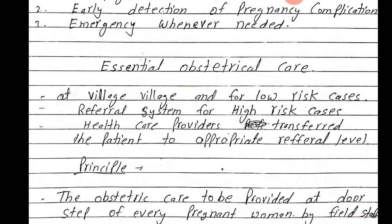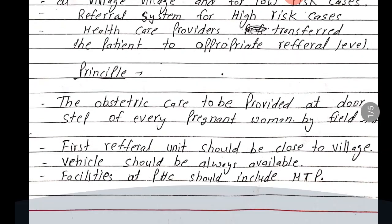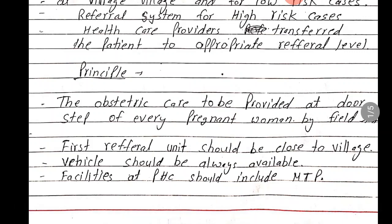Ab dhekhte hai ki essential obstetrical care ke principles kya kya hote hain. The obstetrical care to be provided at doorstep for every pregnant woman by field staff. Is ko primary level pe maan sakti ho — is mein jo healthcare providers hain, jo field staff hain, woh every pregnant woman ke ghar ghar jaakar usko care provide karte hain. First referral unit should be close to village, aur vehicle should be always available. Facility at PST should include MTP.